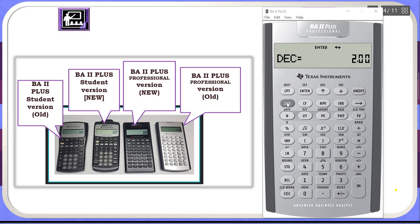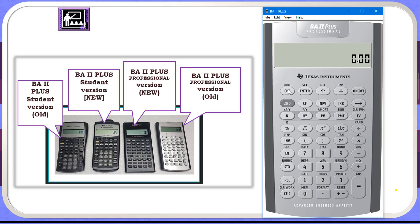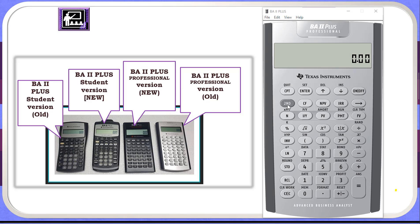When you want to come out of the secondary function, click the second shift key and then click Quit — you will return to primary function mode. The second key is actually a toggle key, meaning when I press it, it takes us to secondary mode where we can use secondary functions. If I click it again, it takes us back to regular mode. So the second key switches back and forth between regular and secondary functions.